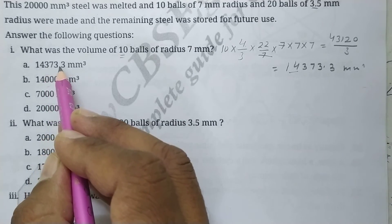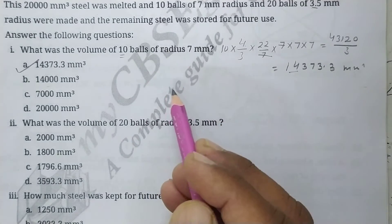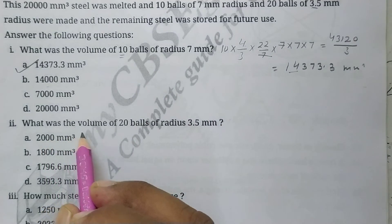So next is, what was the volume of 20 balls of radius 3.5 mm? 3.5 means 7 by 2.